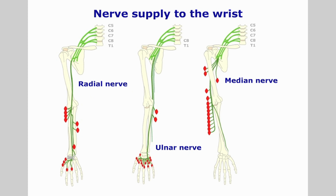The wrist and hand are innervated by the median, ulnar and radial nerves. Correct assessment and treatment of the hand is extremely important, as impairment can lead to both physical and social disability.